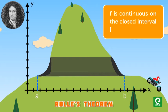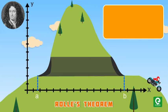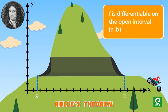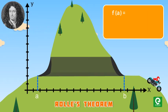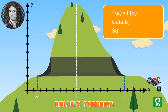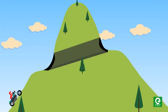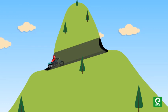According to Rolle's theorem: f is continuous on the closed interval [a, b], f is differentiable on the open interval (a, b), and f(a) is equal to f(b). Then there is a number c in open interval (a, b) such that f'(c) equal to zero.